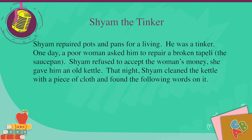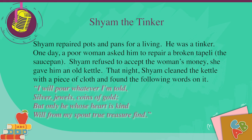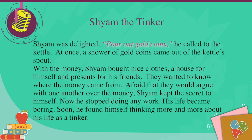Shyam repaired pots and pans for a living. He was a tinker. One day, a poor woman asked him to repair a broken tapeli — the saucepan. Shyam refused to accept the woman's money. She gave him an old kettle. That night, Shyam cleaned the kettle with a piece of cloth and found the following words on it: 'I will pour whatever I am told. Silver dwells coins of gold. But only he whose heart is kind, will, from my spout, true treasure find.' Shyam was delighted. 'Pour out gold coins,' he called to the kettle. At once, a shower of gold coins came out of the kettle spout.